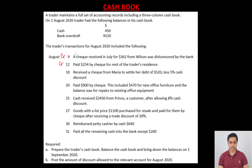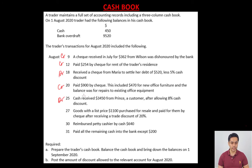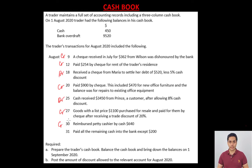August 18: received a check from Maria — debit side. All receipts, whenever cash or check is received, appear on the debit side; whenever there's a payment, it appears on the credit side. August 20: paid a check of 900 — credit side. August 25: cash received from a customer — debit side. Goods purchased for resale paid by check — credit side. Reimbursement to the petty cashier by cash is a payment, so credit side. Paid all remaining cash into bank is a contra entry, recorded on both sides of the cashbook.